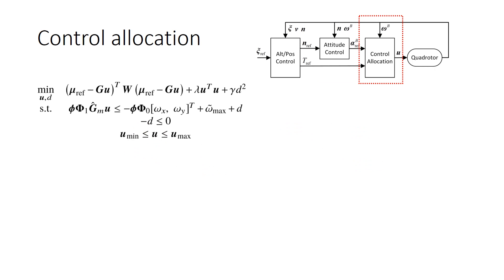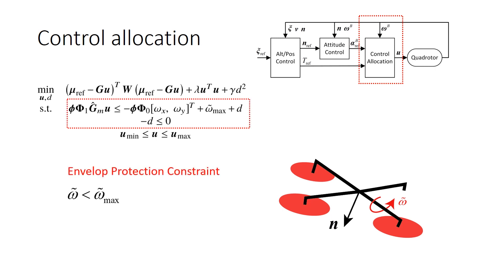The control allocation calculates the RPM command for each rotor by solving a quadratic programming problem. At the meantime, to prevent the drone from rotating about the axis that is not able to decelerate due to the rotor failure, an envelope protection constraint is added to limit the rotation rate on this axis.